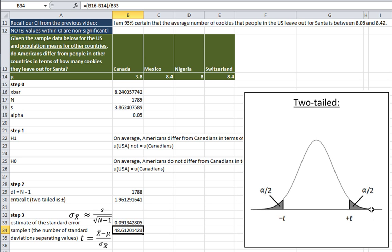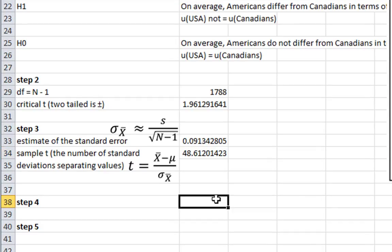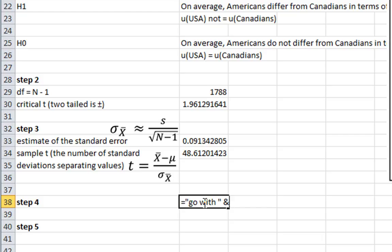Step four is to formally compare the critical statistic and the sample statistic to make a decision. I'll type in a formula using the IF function so it automatically tells you the result of your hypothesis test — whether you go with the null or research hypothesis. The logical test uses the absolute value of our sample statistic compared to the absolute value of our critical statistic, so it works for both negative and positive t values.